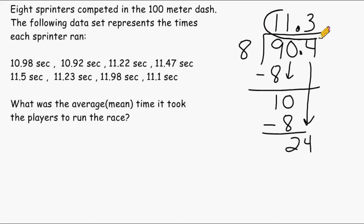So the average time it took each sprinter to run the 100 meter dash was 11.3 seconds.